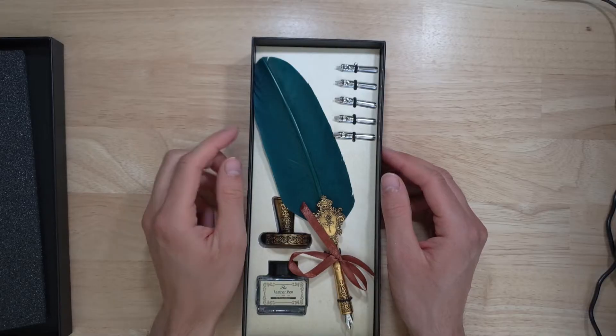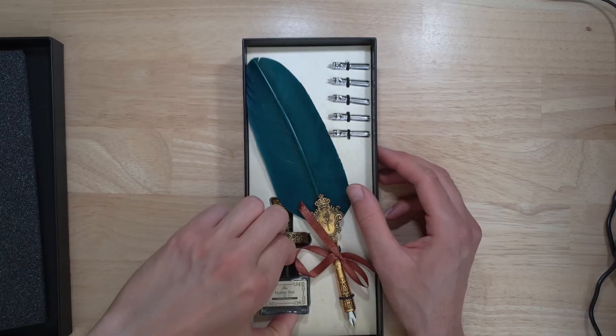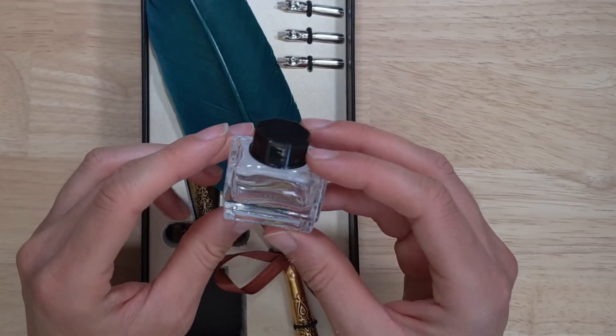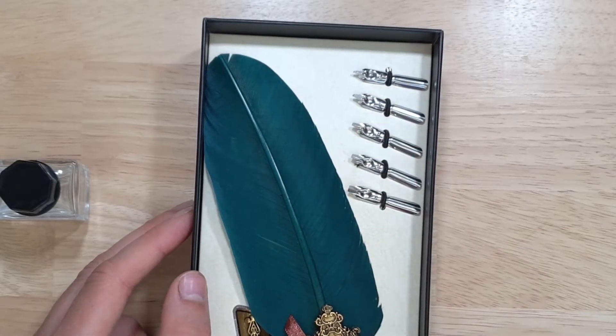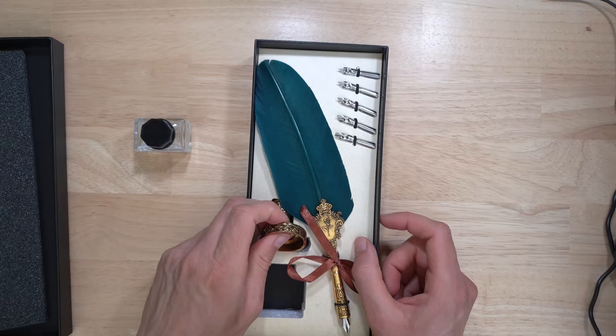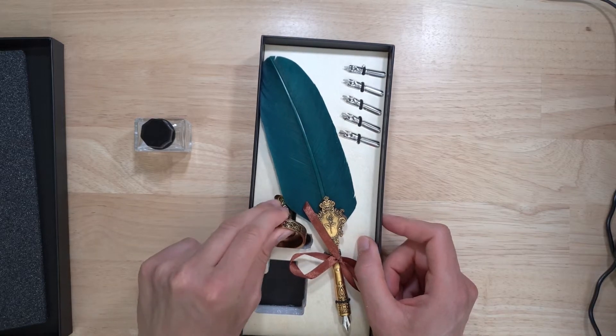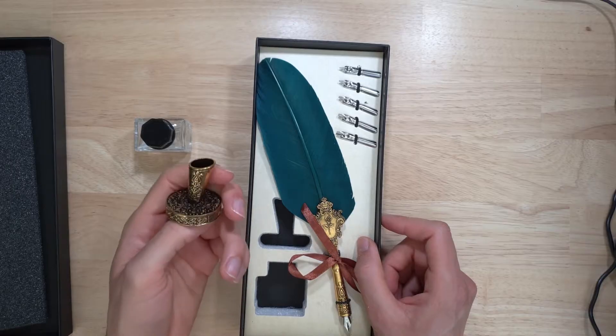What we have here is a feathered dip pen with a bottle of ink, which apparently is, for some reason, empty. It also comes with six nibs, and I wonder about the quality of the nibs, and I also wonder how long I can maintain this accent for. And apparently not very long. I give up already.